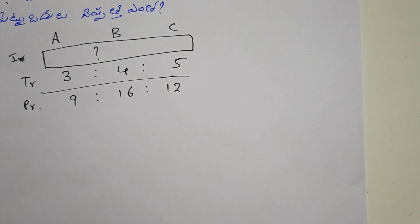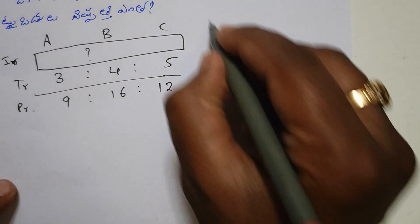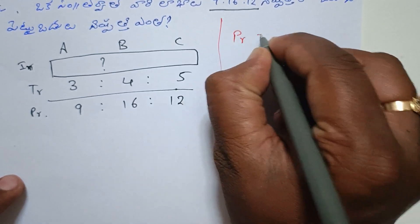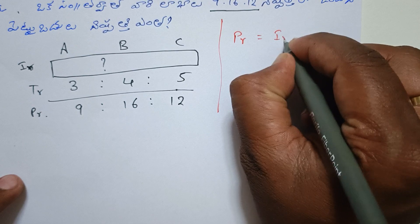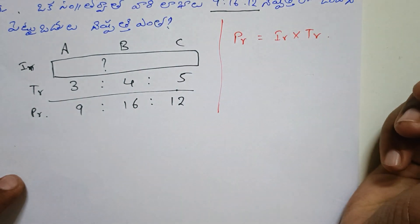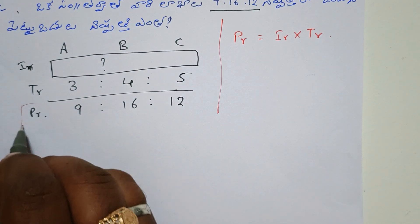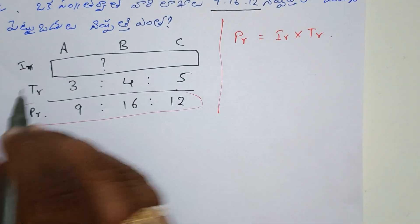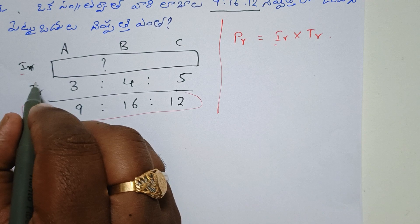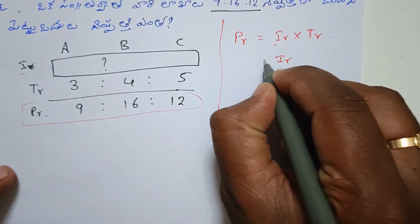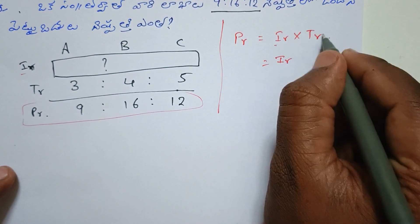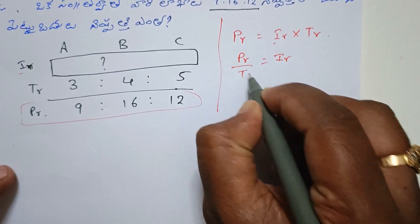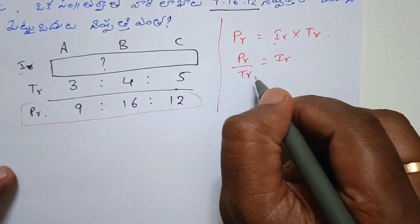I will explain it clearly, as explained in the first video. Profit ratio is equal to the investment ratio multiplied by time ratio. So the investment ratio is equal to profit ratio divided by time ratio.